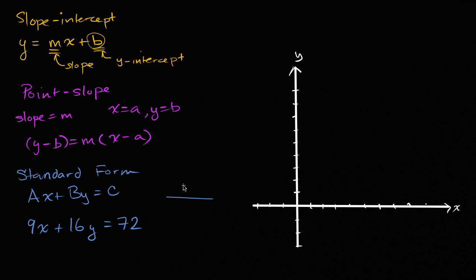So to figure out the x and y-intercepts, let's just set up a little table. The x-intercept is going to happen when y is equal to zero. So when y is zero, 16 times zero is zero, that term disappears, and you're left with 9x is equal to 72. So 72 divided by 9 is 8, so x would be equal to 8.